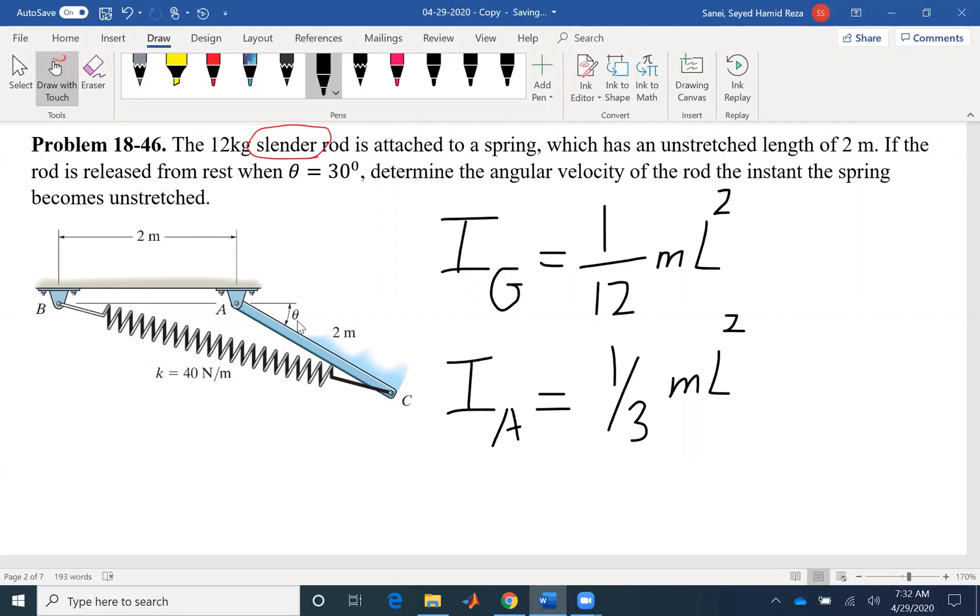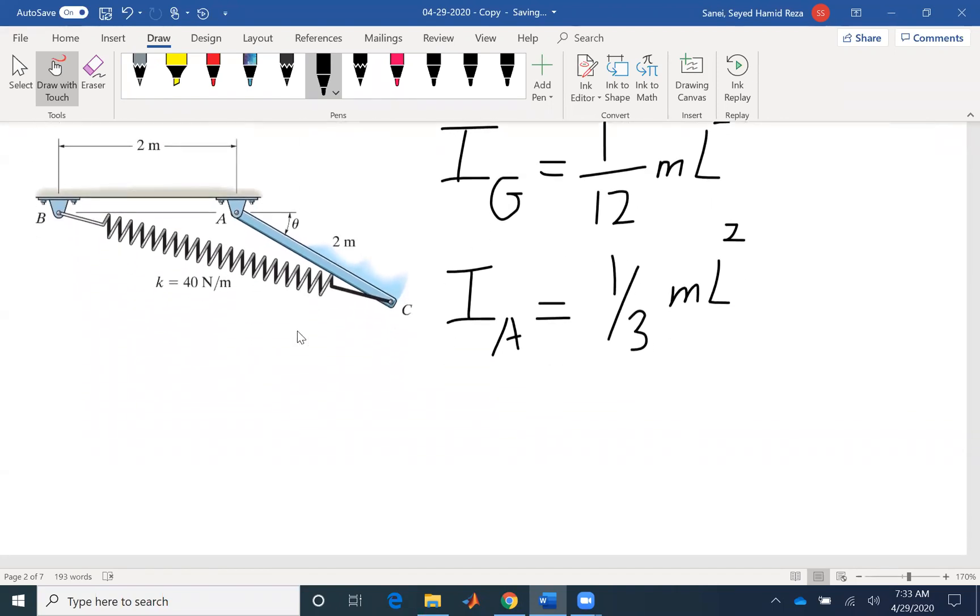First we have to find what that angle is when the spring becomes unstretched. Looking at the problem, we have the initial angular velocity, we want the final angular velocity between two instants and these instants are position instants, so there is no time involved. So we can use work-energy or conservation of energy. We can see that we do not have any non-conservative forces, so it's better to use conservation of energy.